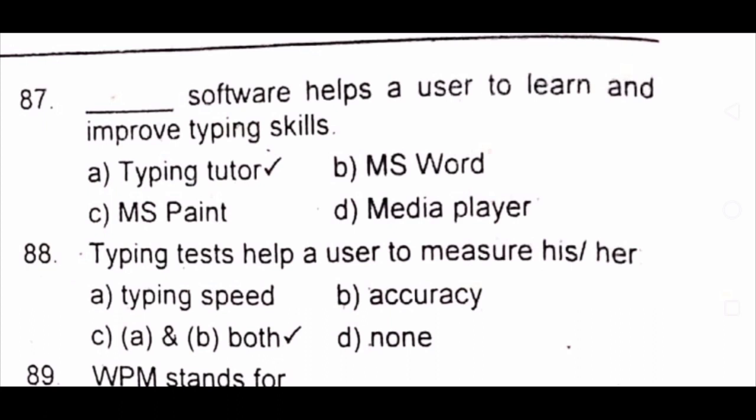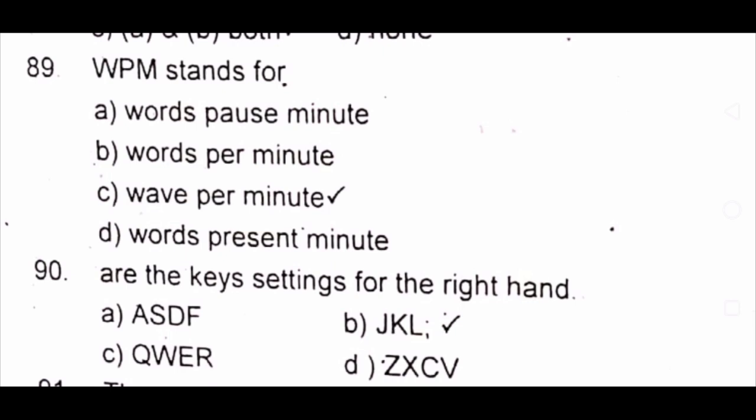Question 88: Typing tutor measures A) typing speed B) accuracy C) both A and B D) none. The answer is C) both A and B.